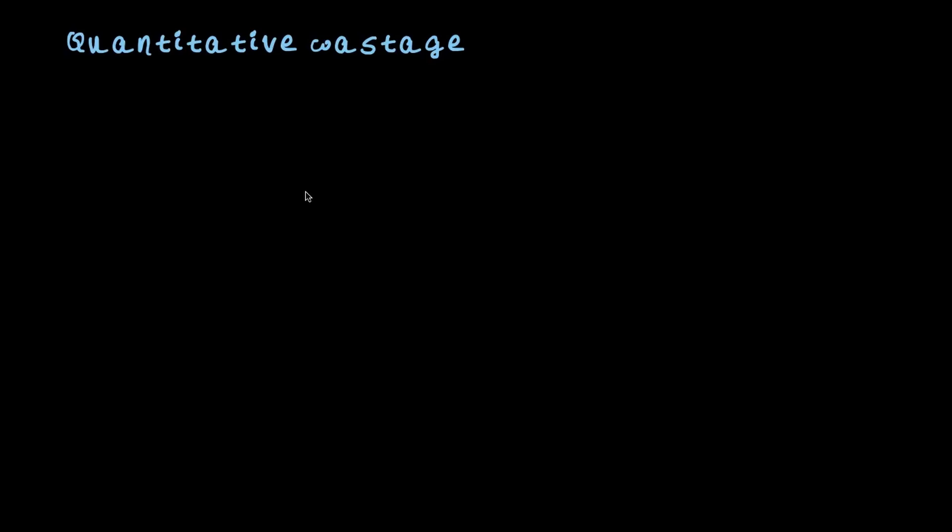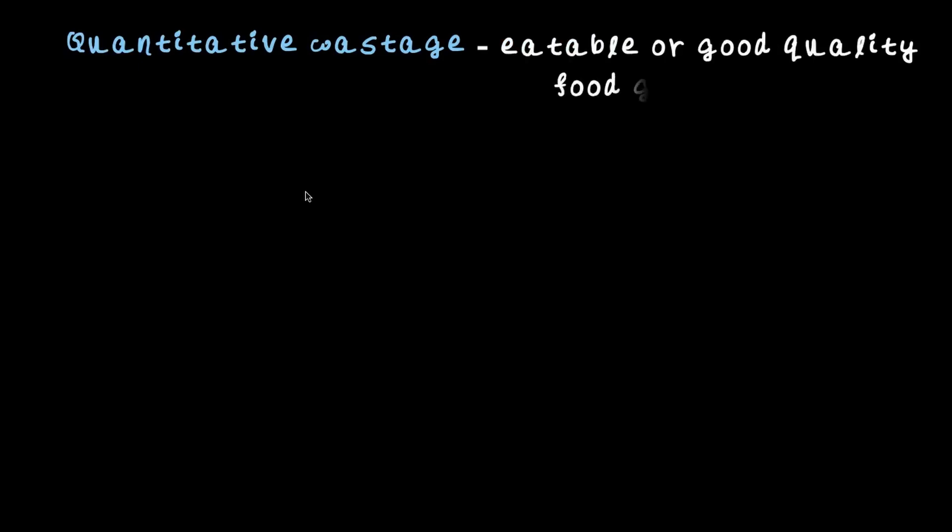We saw some of the ways in which food wastage can happen, and overall the wastage can be classified into two categories. The first one, let's call it quantitative wastage. Why is it called quantitative wastage? Because the wastage happens in quantities — eatable or good quality food is going to waste.